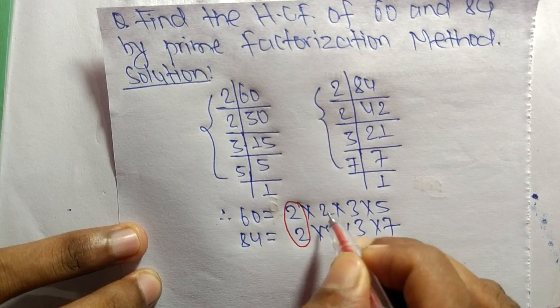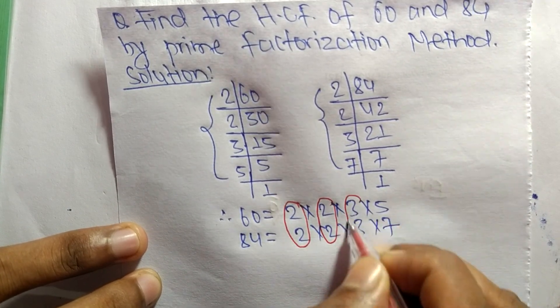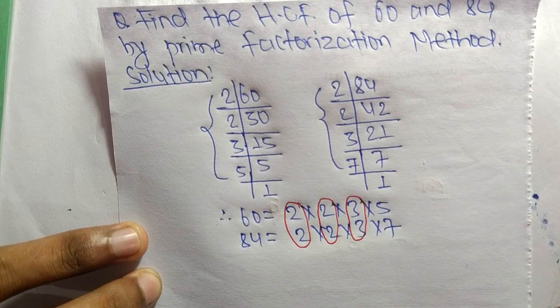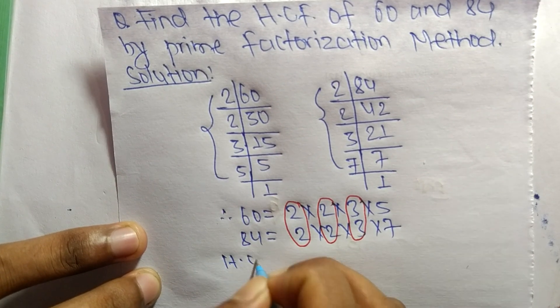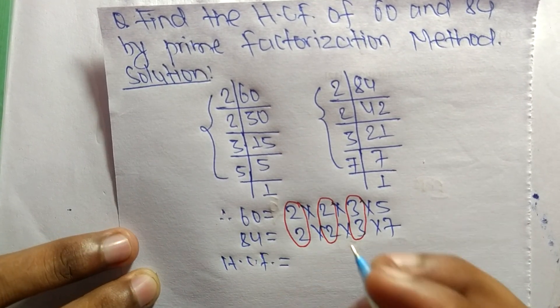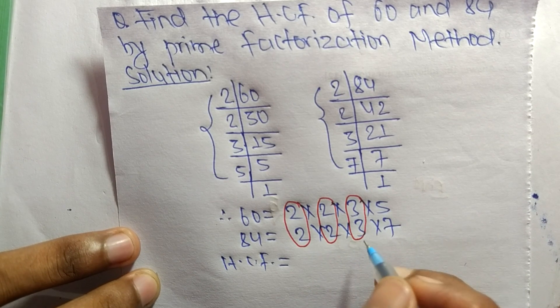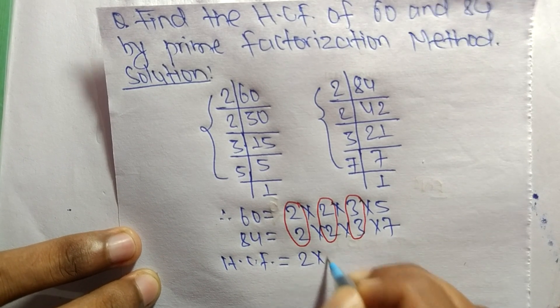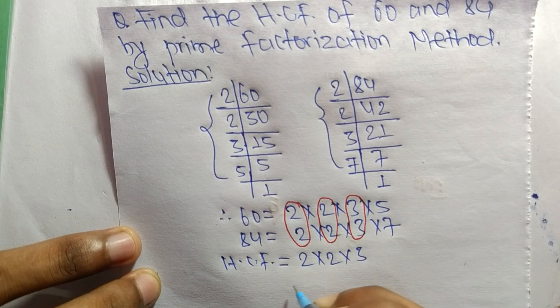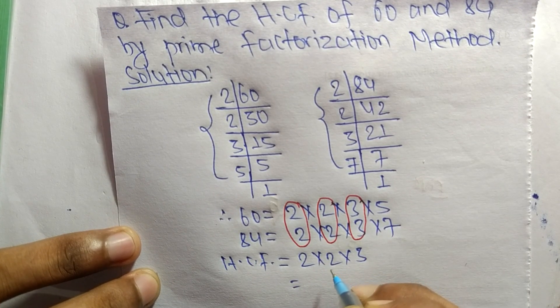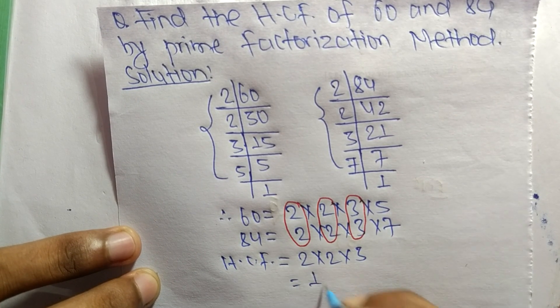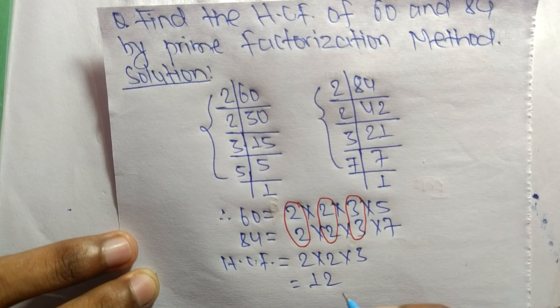The common factors here are 2, 2, and 3. So the HCF is equal to the product of common factors, which are 2, 2, and 3. So 2 times 2 equals 4, and 4 times 3 equals 12.